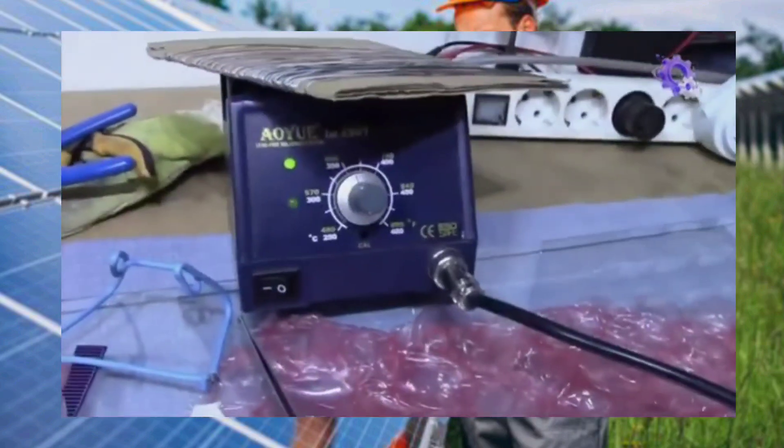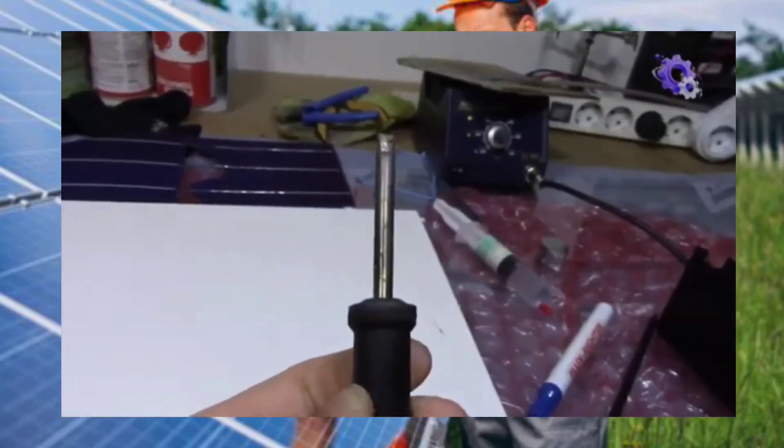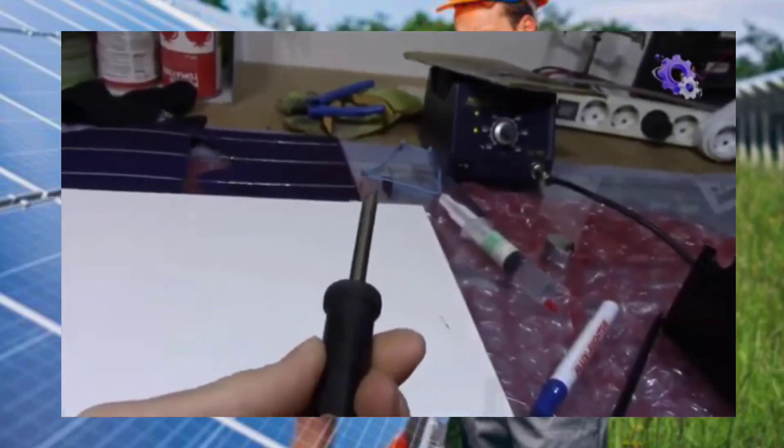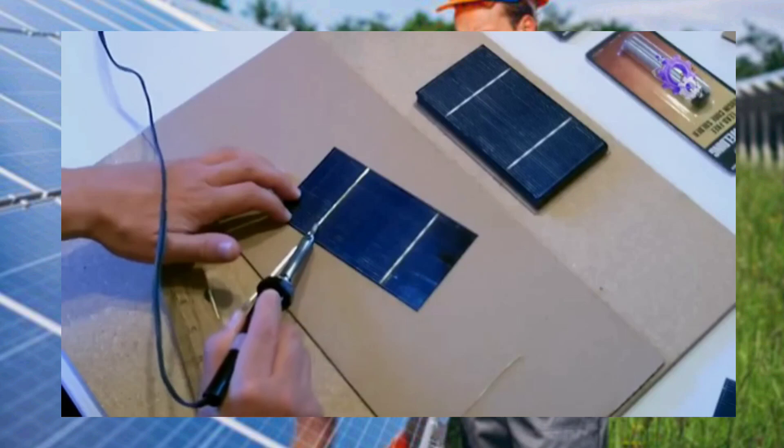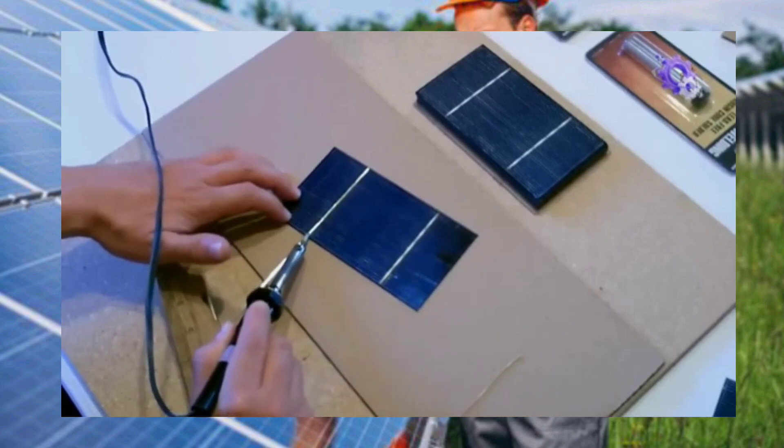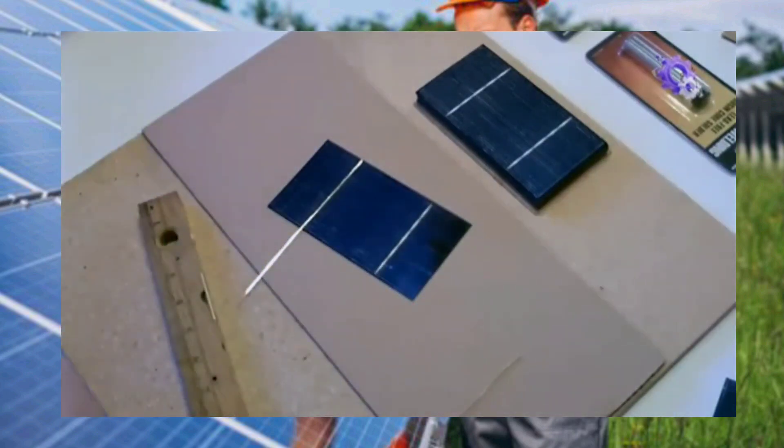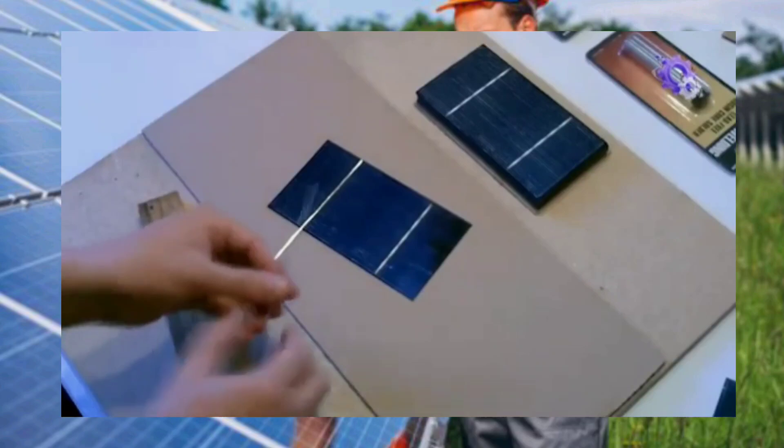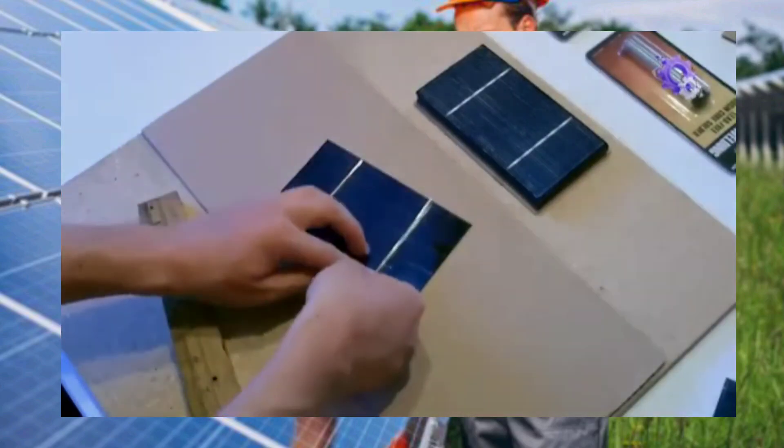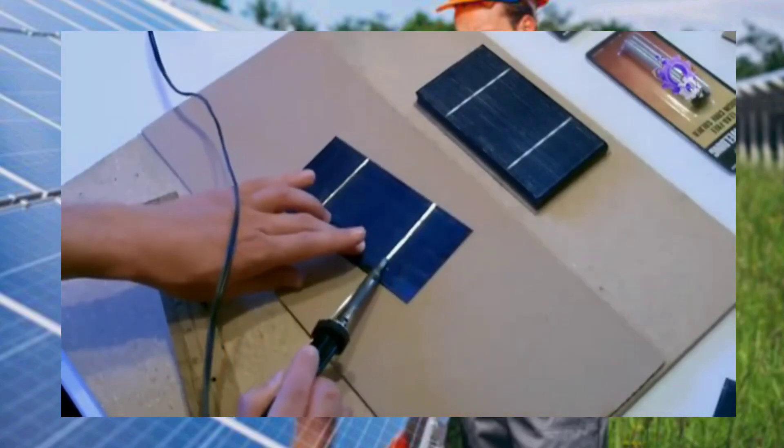The fun begins when it's time for connecting the cells. Soldering cells together to form an array requires attention to detail and proper technique. Techniques like tabbing and stringing help optimize energy production and minimize shading between cells during and after installation.